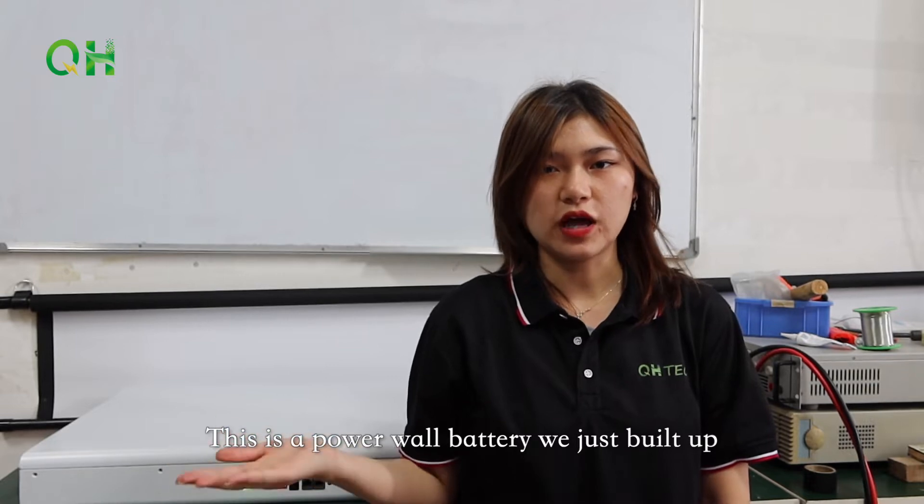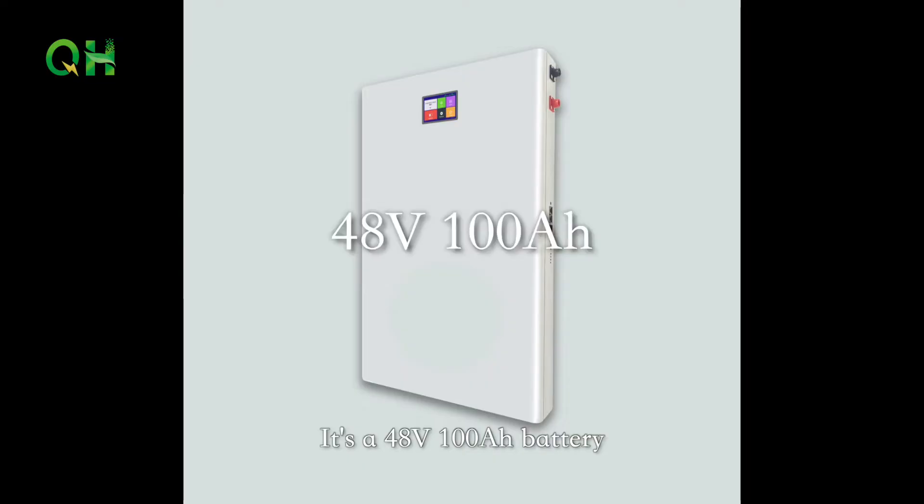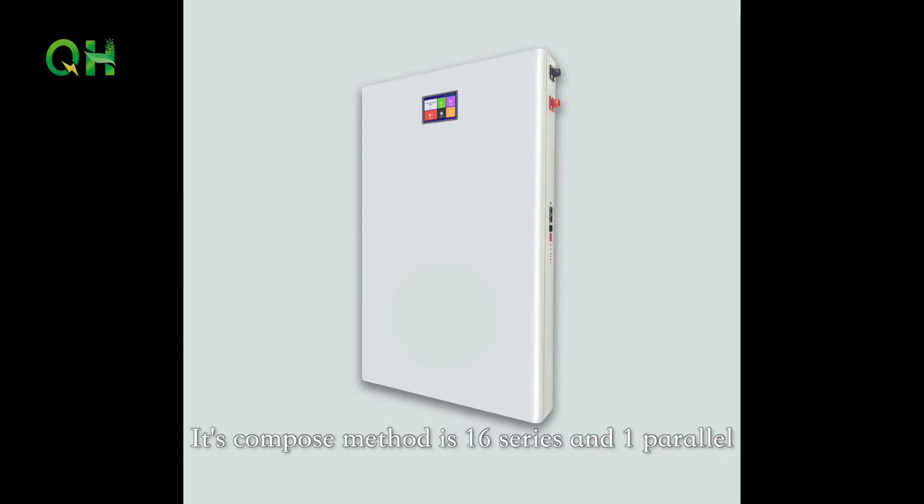This is the Powerwall battery we just built up. It's a 48V 100Ah battery. Its composed method is 16 series and 1 parallel.